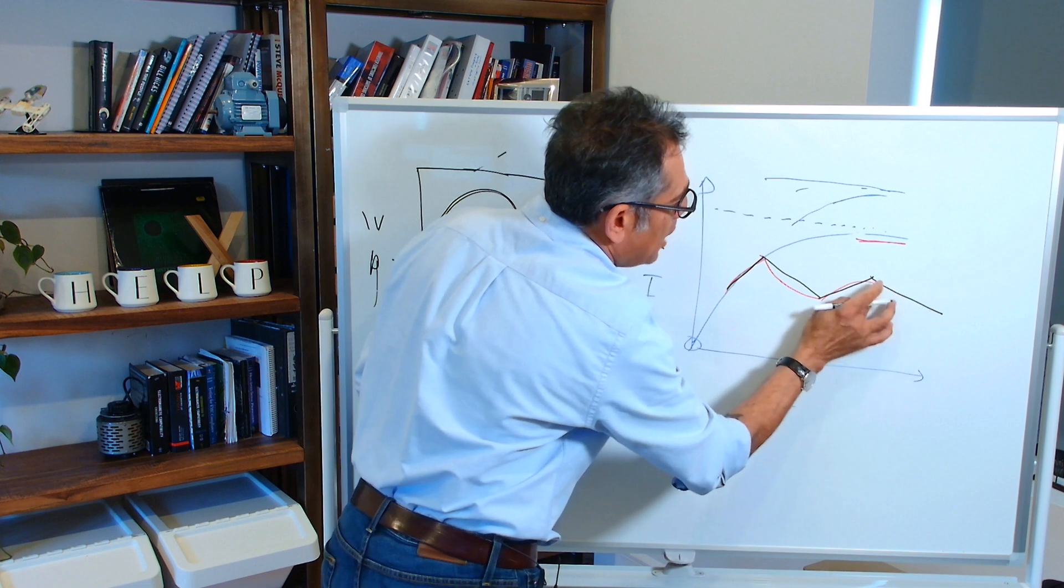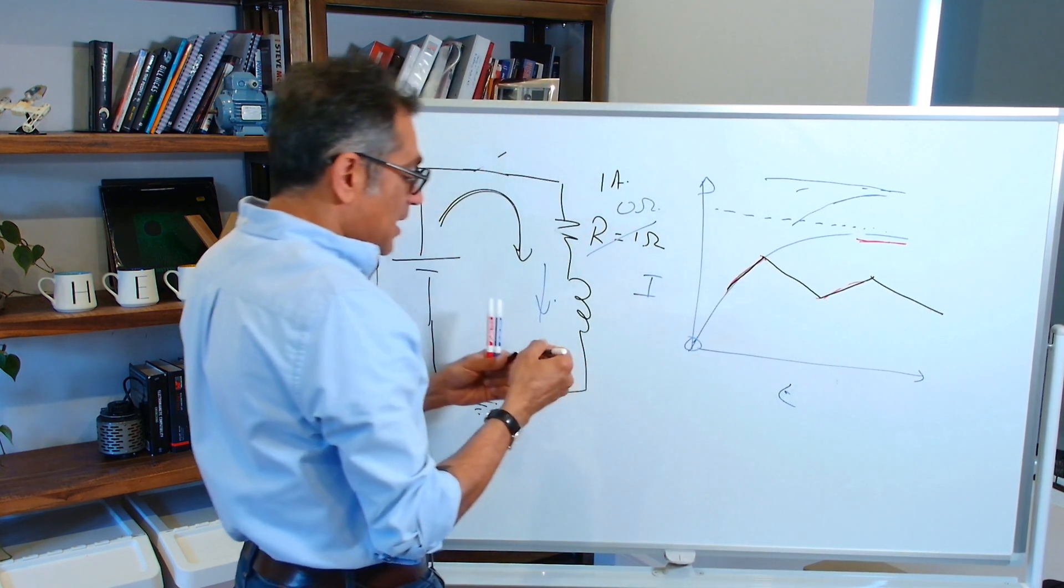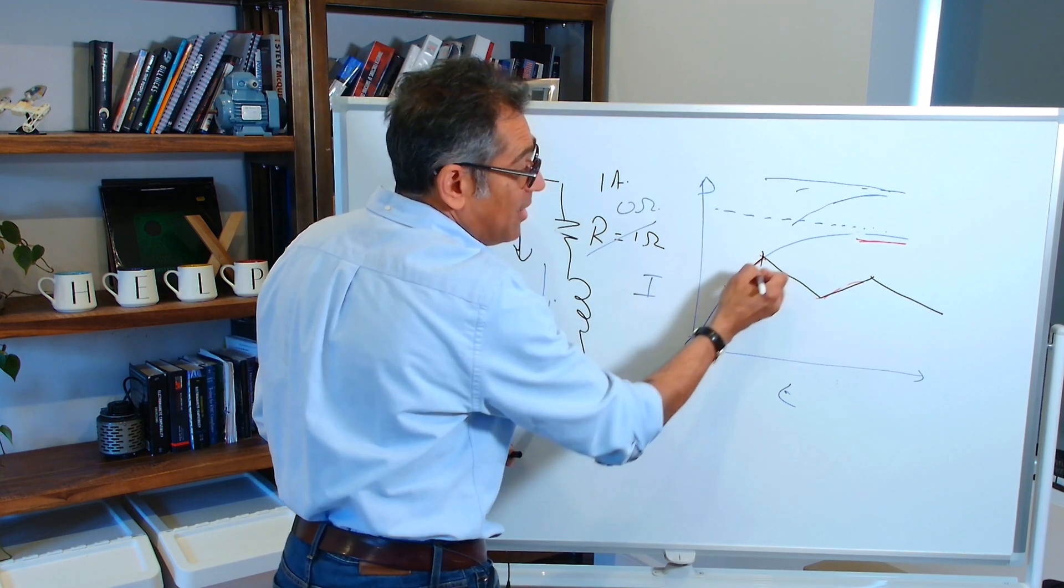And that is a classic shape of the triangular current that you see in the inductor. And then we do lots of analysis whereby you say, well, this is a straight line.